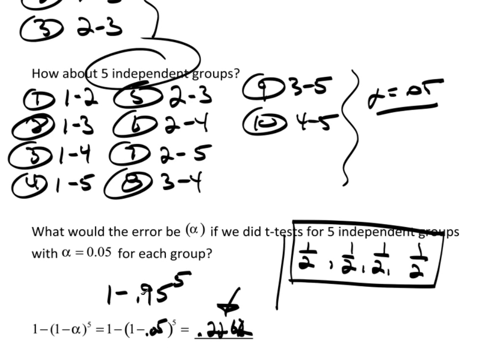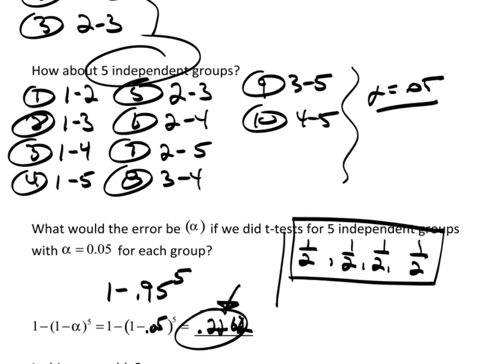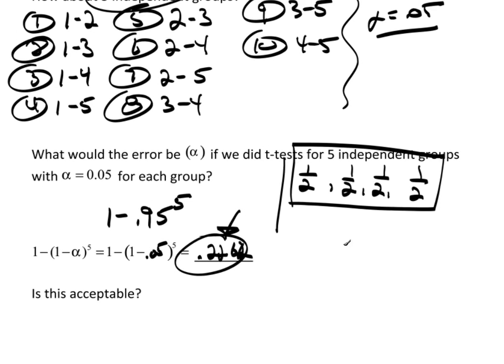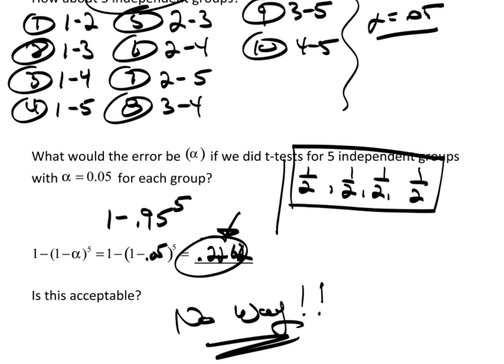The point is, this family error rate, if I can call it that, or the group error rate for all of these, would be close to 22%. So rather than having a 5% chance of a type 1 error, I now have almost a 23% chance of a type 1 error. Is this acceptable? Obviously, no way. That's bad, that's a serious issue there.